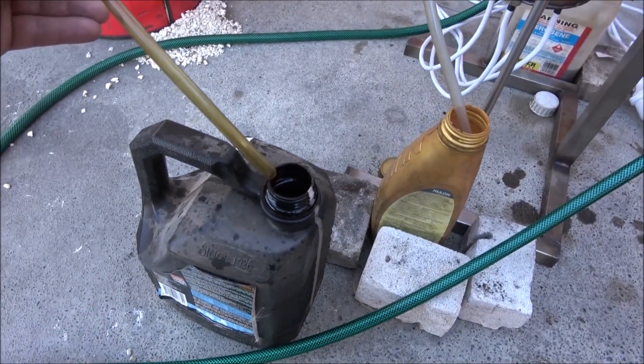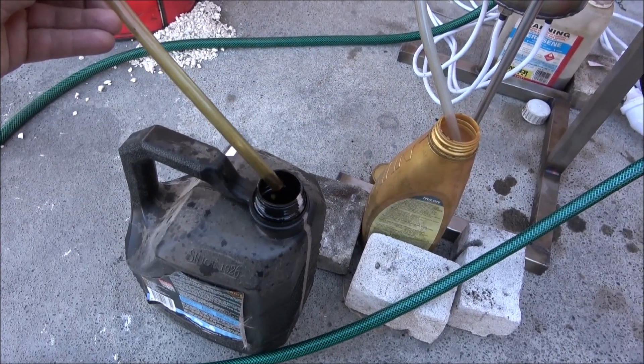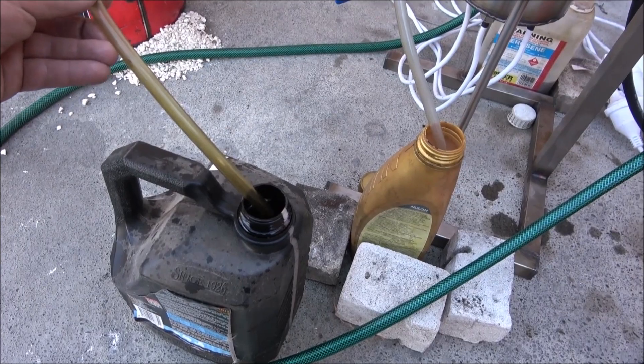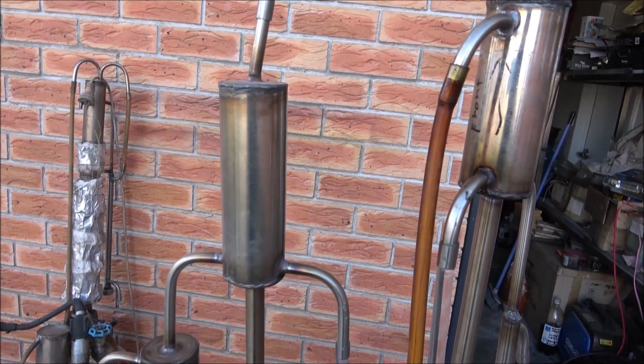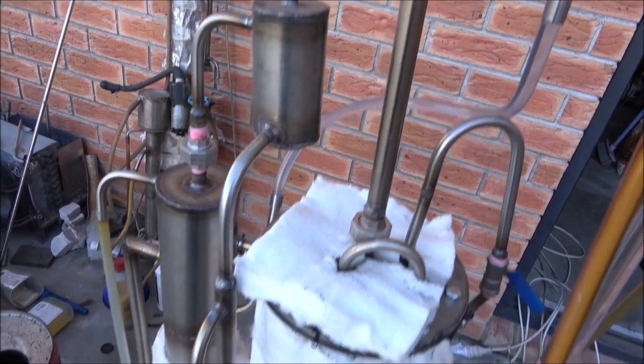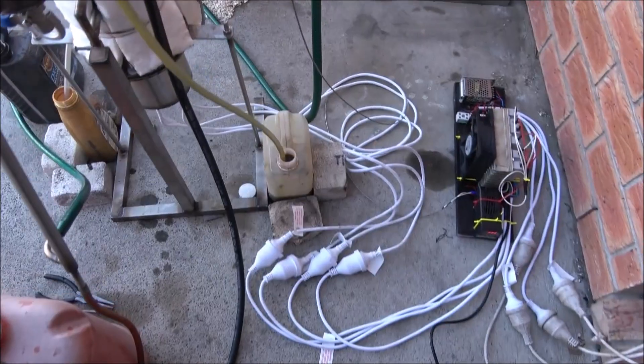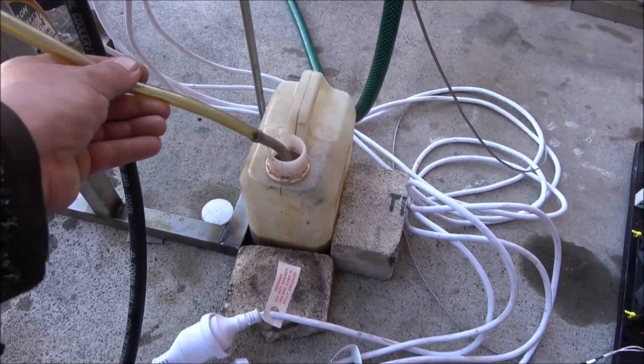Here's some condensate that's going directly from the reactor up into the liquid separator on top here. Going up here into this column, then down, separated and goes down. Collected separately. It's more like a kerosene fraction. It's another fraction, also more like a kerosene fraction.